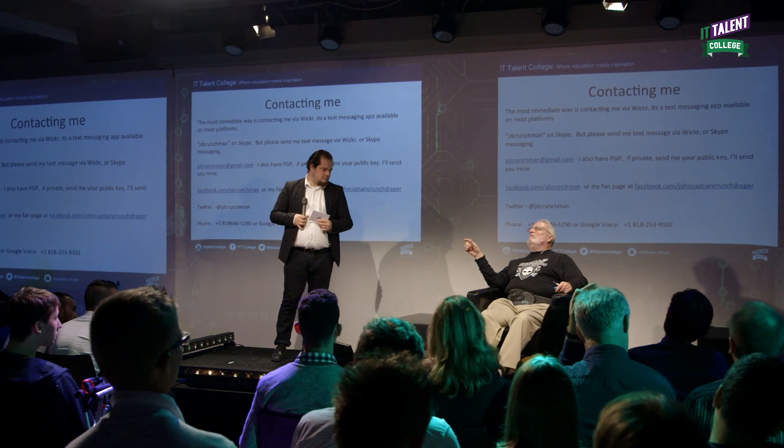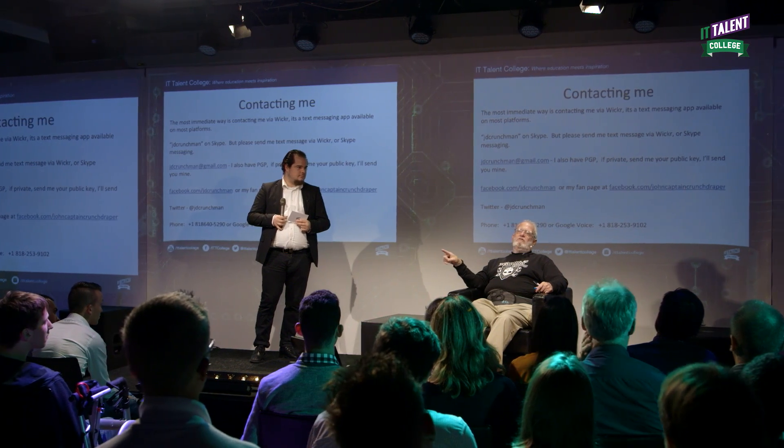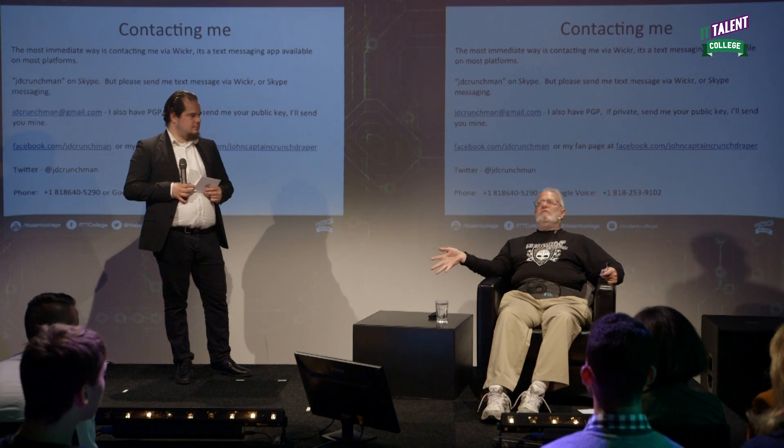What would you want to use encryption for? Private messages to your friends — that's a good reason. Sending passwords to systems when you're working with a group of people. You wouldn't put it on Gmail or Skype — you'd put it on Wickr or Signal. Passwords, financial information, medical records — all kinds of reasons to use encryption. You just need to start using it. If you're a beginner in encryption, PGP is bad.